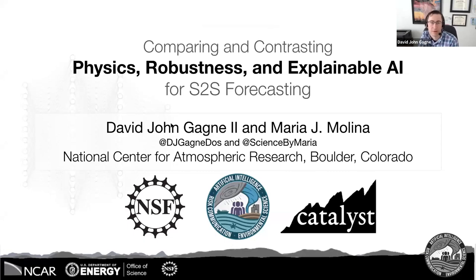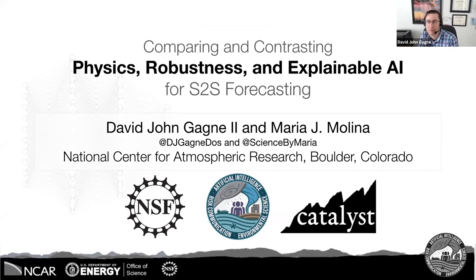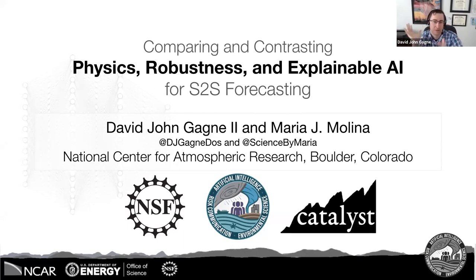Today I'll be talking about comparing and contrasting physics, robustness, and explainable AI for sub-seasonal to seasonal forecasting. I'm going to try to have a more S2S focus and highlight how physics, robustness, and explainable AI play key roles across weather and climate, but also especially in the S2S domain.